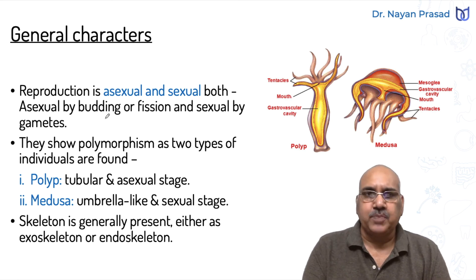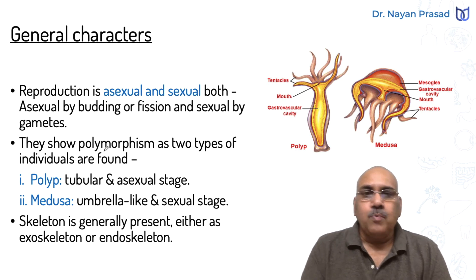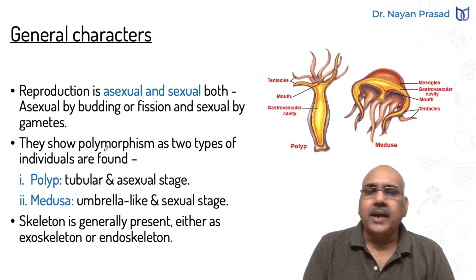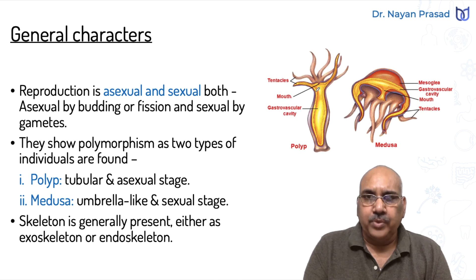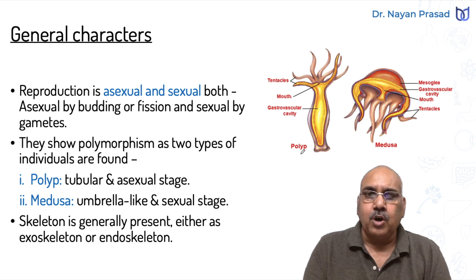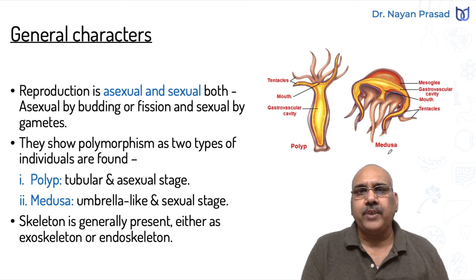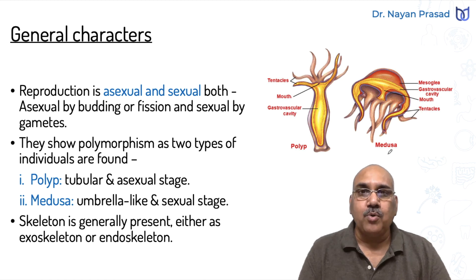Reproduction is both asexual and sexual. Asexual reproduction takes place by budding or fission, while sexual reproduction takes place by gametes. The members of this phylum show polymorphism — 'poly' means many and 'morph' means form. Some members are found with a tubular body and some with an umbrella-shaped body.